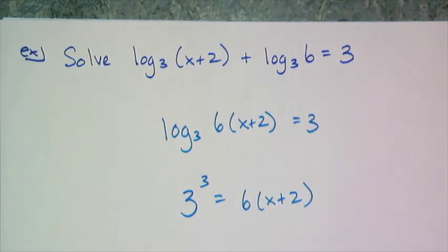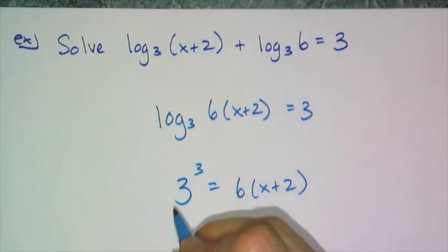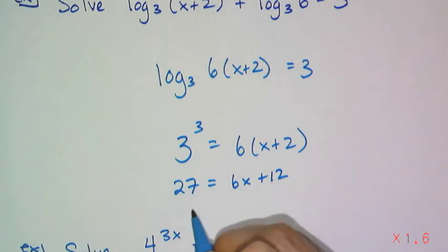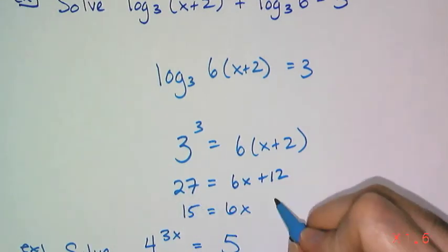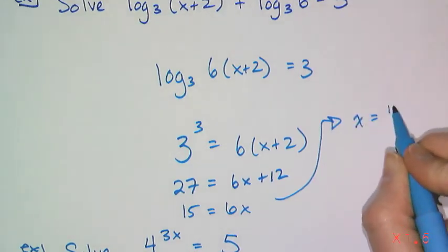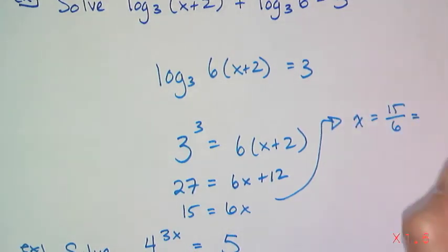And this gives me a simple linear equation. So I have 27 equals 6x plus 12. And then 6x is equal to 15. And then I need some space. So x is equal to 15 over 6, which is the same thing as 5 halves.